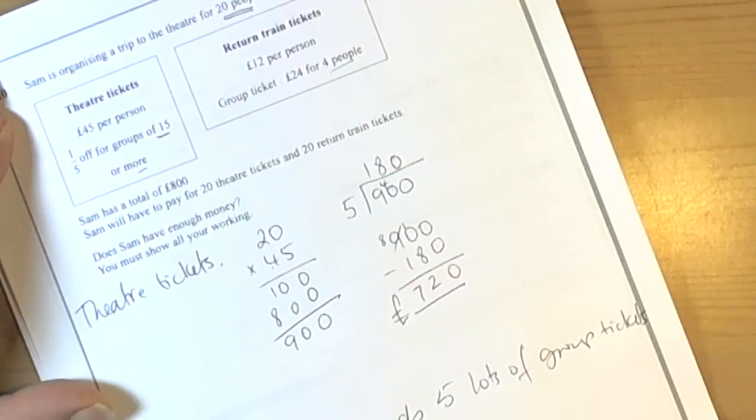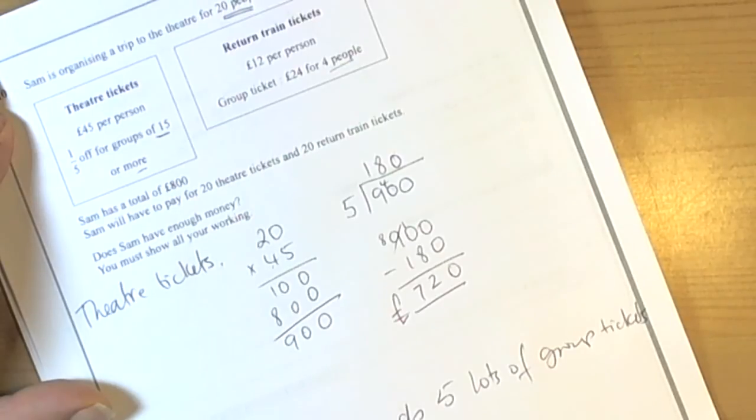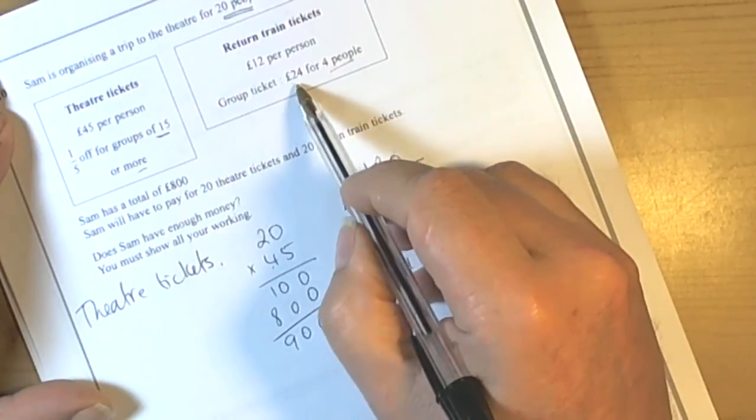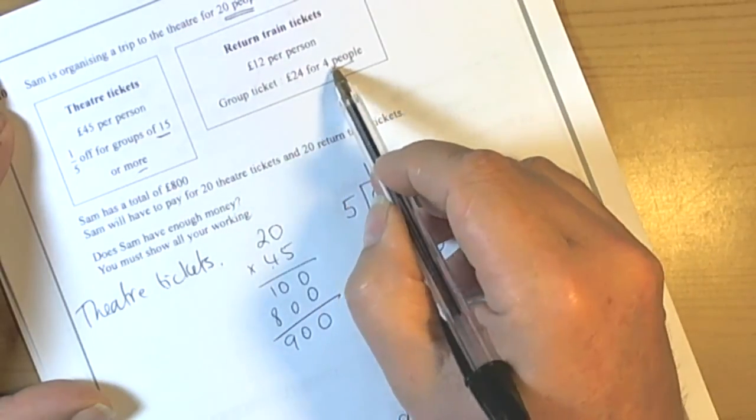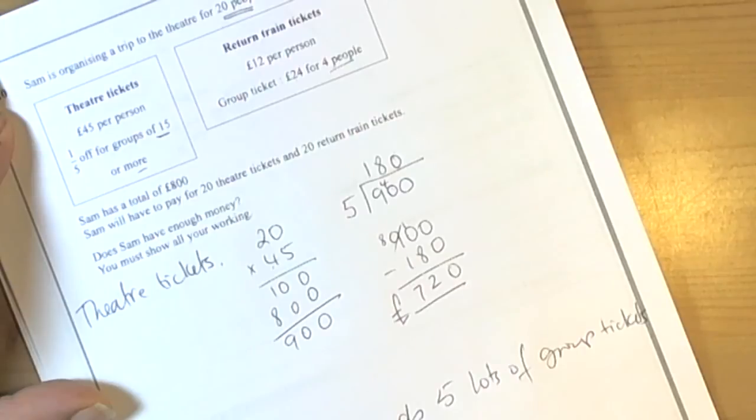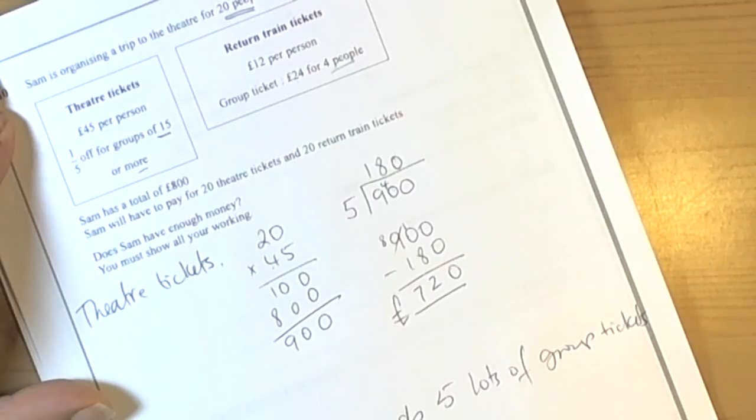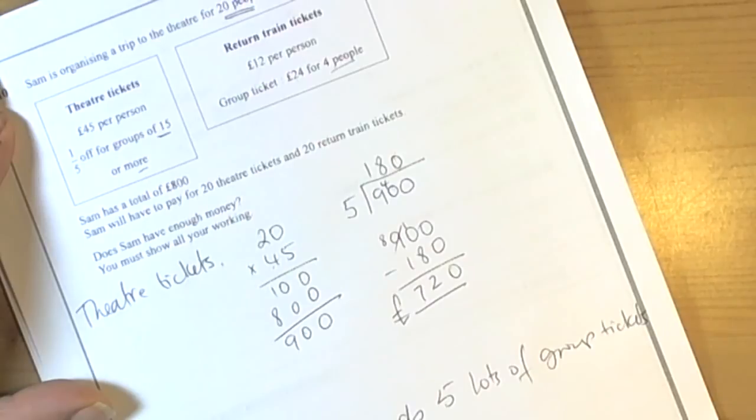And 5 times 120, sorry 12, so it's 5 times 12 pounds, no it's not. Look at the information carefully, it's 24 pounds for 4 people, so it's 5 times 24. 5 times 20 is 100, 5 times 4 is 20, so it's going to cost 120 pounds for the rail travel.